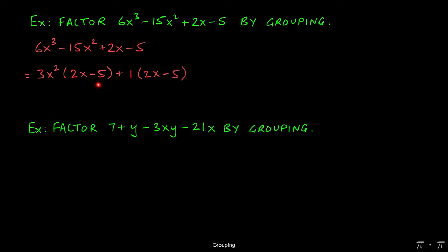Now between these two giant terms, we see that the binomials do match. The 2x minus 5 is the same in both expressions, so we can factor it out as the GCF. Again, as we've done before, how do we know what comes inside the parentheses? We divide this first term by the GCF 2x minus 5 and get 3x squared. We divide this second term by the GCF 2x minus 5 and get positive 1.